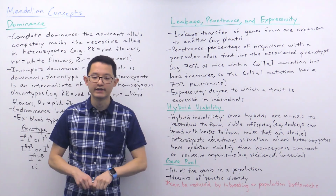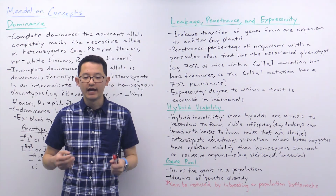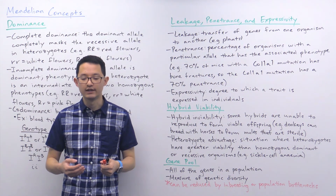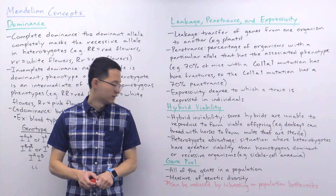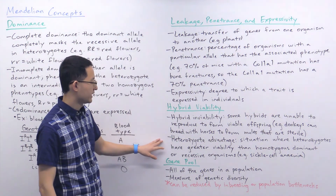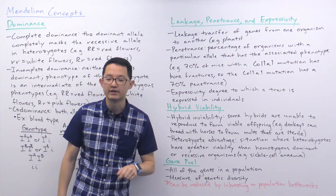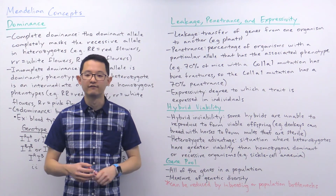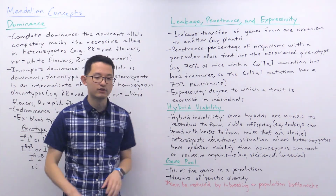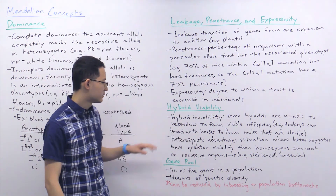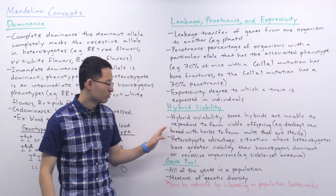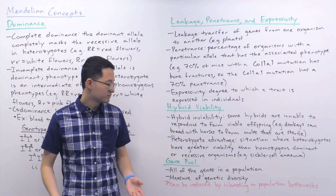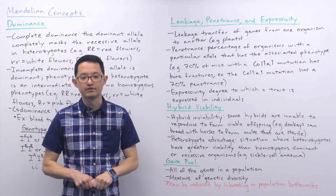Hybrid viability looks at heterozygotes and their ability to produce offspring and pass on genes to the next generation. One concept is hybrid inviability, where hybrids are unable to produce viable offspring. A common example is mules, which are hybrids produced from crosses between donkeys and horses. Mules are living organisms used on farms, but they are sterile and cannot reproduce.